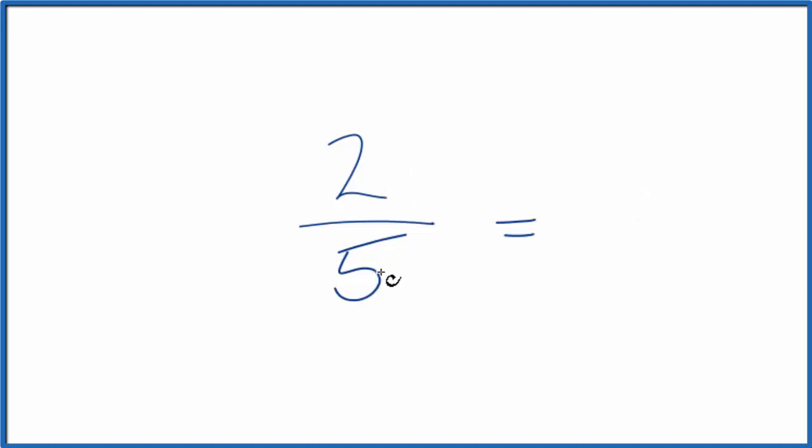Essentially what we're asking is how many times does 5 go into 2 and then we have that in decimal form.